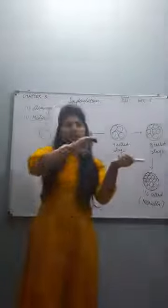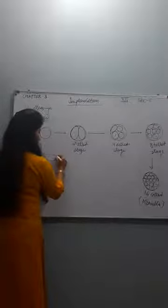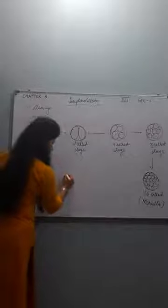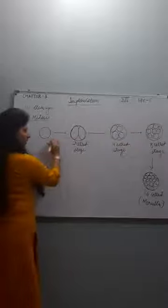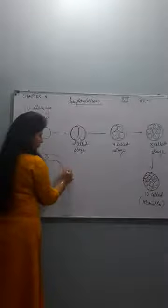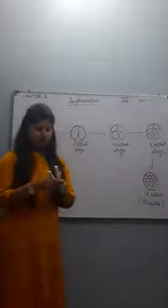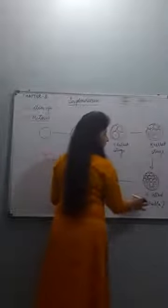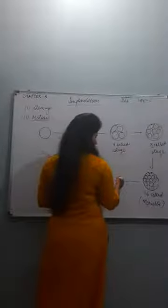The 16-cell stage is known as morula. The ovum is fertilized at the ampullary-isthmic junction, and the zygote keeps on moving down toward the uterus. It keeps dividing while moving, and from the four to sixteen-cell stage it is known as morula. Then it converts into blastula, or blastocyst.